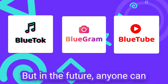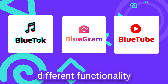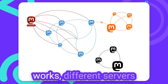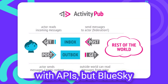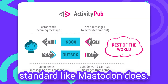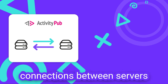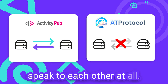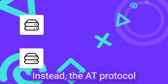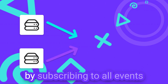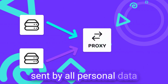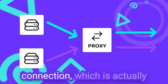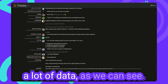But in the future anyone can define lexicons to support different functionality for all kinds of different social media applications. So far this sounds pretty similar to how Mastodon works — different servers with APIs. But BlueSky doesn't use the ActivityPub standard like Mastodon does. While Mastodon uses direct connections between servers to exchange data, with the AT protocol those servers are not really meant to speak to each other at all. Instead, the AT protocol utilizes a proxy server to distribute all the information by subscribing to all events sent by all personal data servers on the network. It relays them and sends them via a common WebSocket connection, which is actually a lot of data, as we can see.